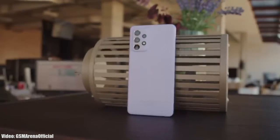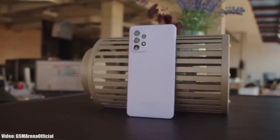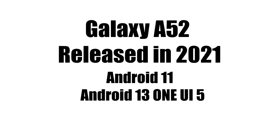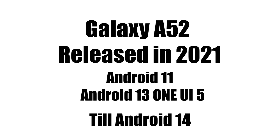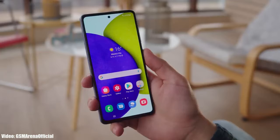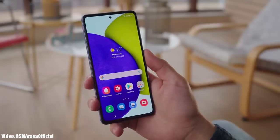Samsung is now rolling out the official Android 13 One UI 5 update to the Samsung Galaxy A52. Samsung released the A52 in 2021 with Android 11, and now it's getting its second major Android update, which is Android 13 with One UI 5. It will continue to get Android updates till Android 14, as it falls under Samsung's three years of software updating policy.